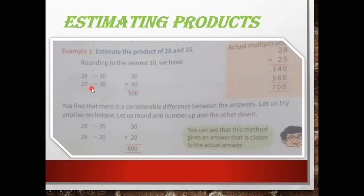Next we have 25. When you round off 25 to the nearest 10, in the ones place you have 5, so it changes to the next 10 — that means 30. After rounding off both numbers to the nearest 10, we get 30 × 30.